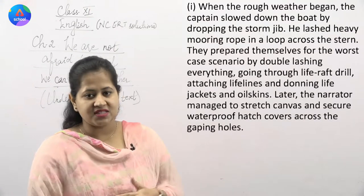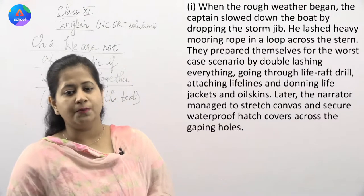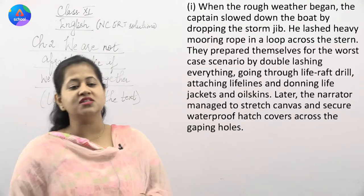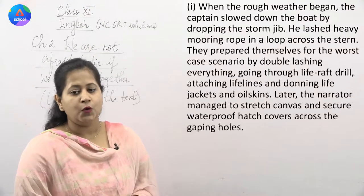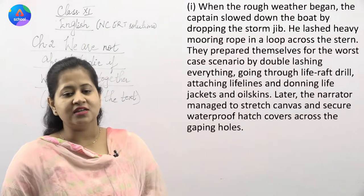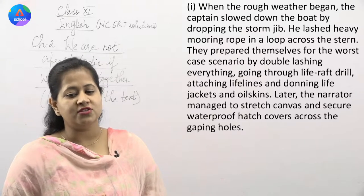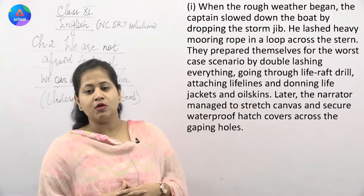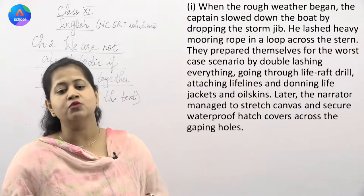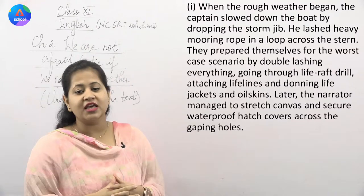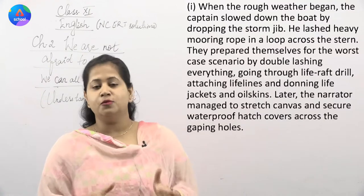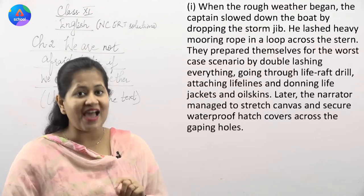When the rough weather began, the captain slowed down the boat by dropping the storm jib. He lashed heavy mooring rope in a loop across the stern. They prepared themselves for the worst-case scenario by double lashing everything, going through life raft drill, attaching lifelines, and donning life jackets and oilskins. Later, the narrator managed to stretch canvas and secure waterproof hatch covers across the gaping holes. He dropped the storm jib, lashed all the ropes, and was entirely prepared — life raft drill, lifelines, life jackets, everything.